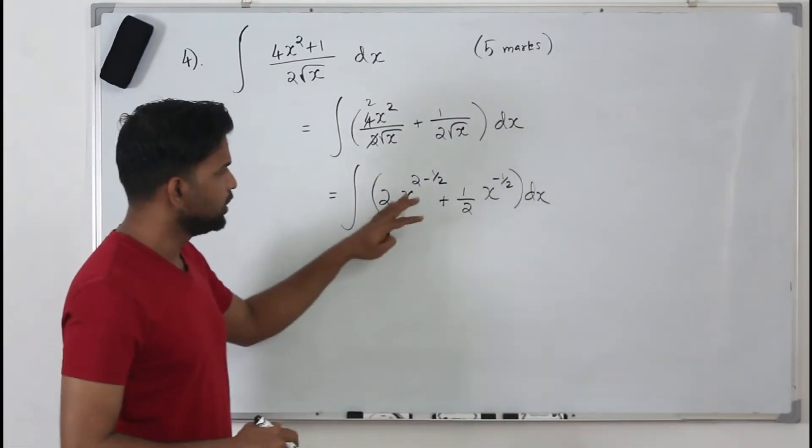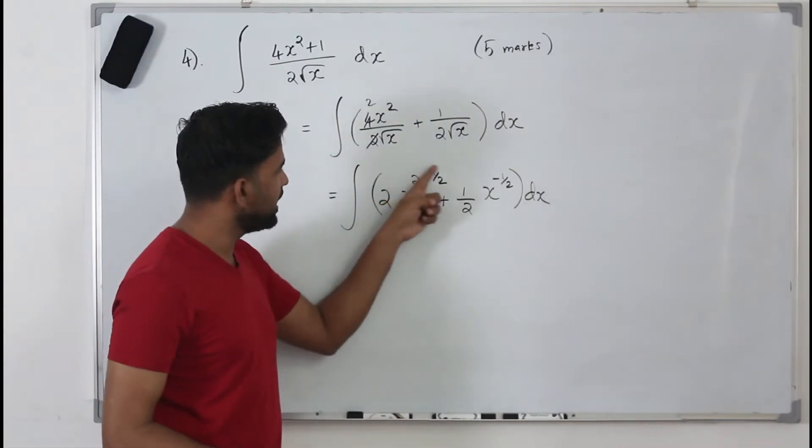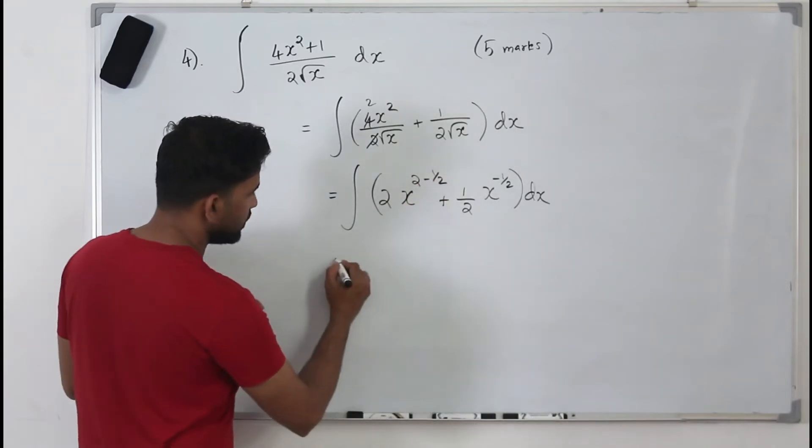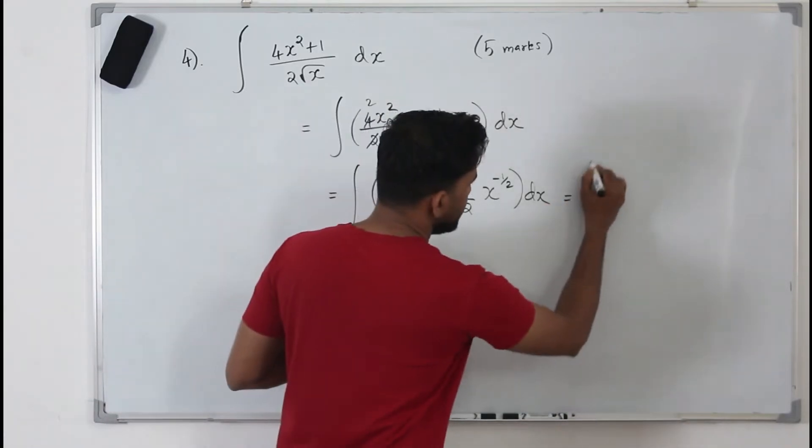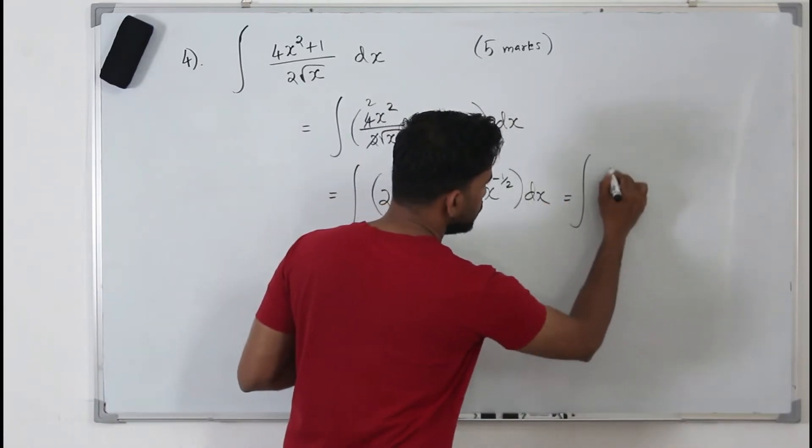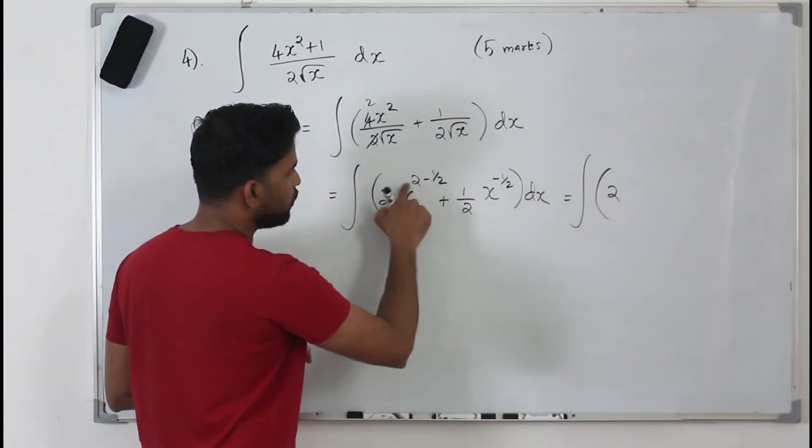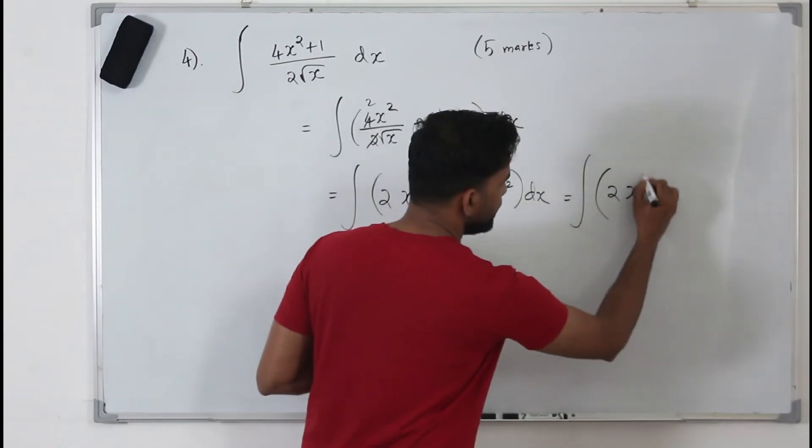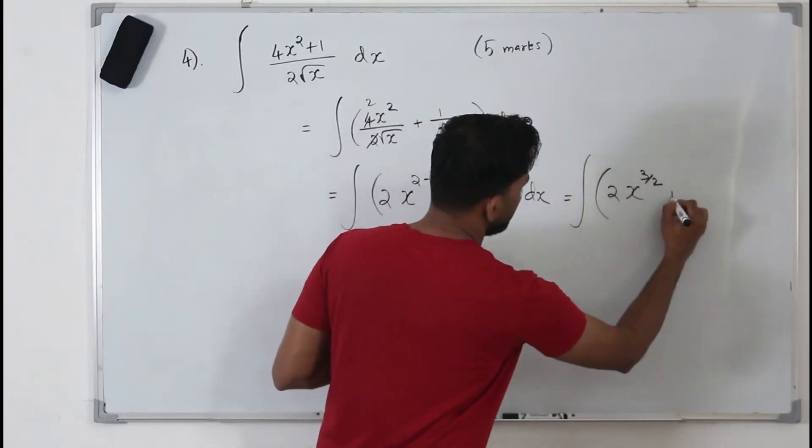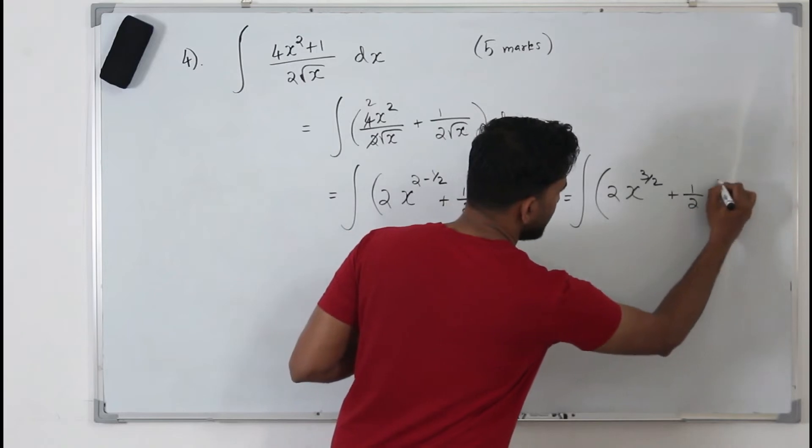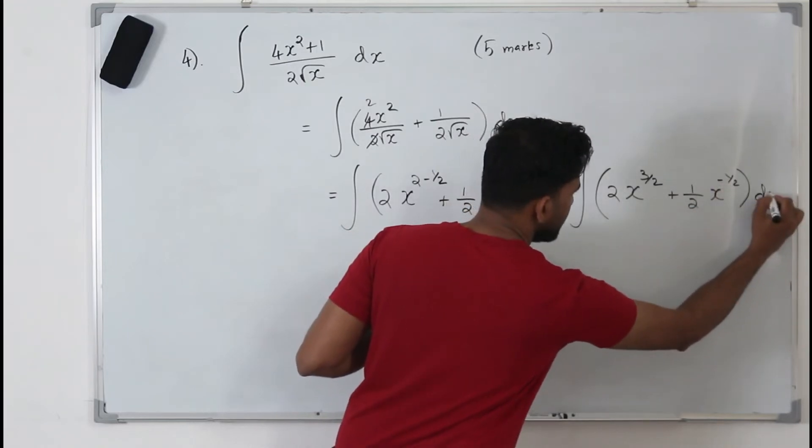And now you can integrate but we'll tidy this up a little bit. So it becomes integral 2x to the power 4 minus 1 which is 3 by 2 plus half x to the power minus half dx.